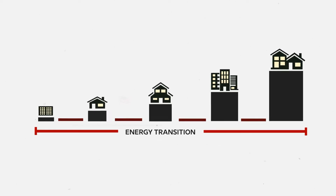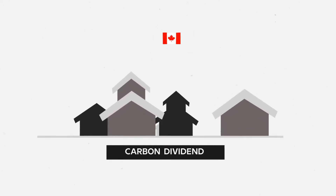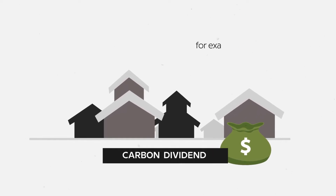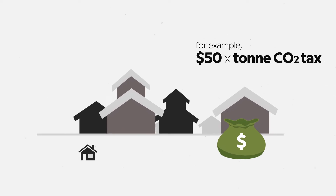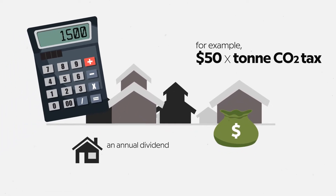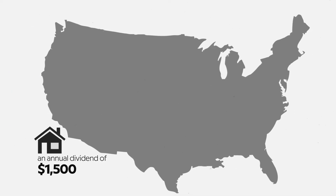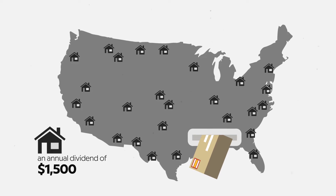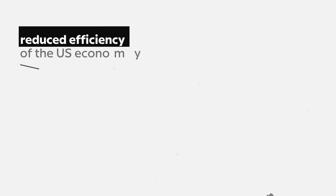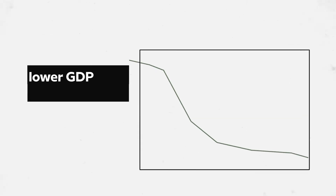As already implemented in Canada, revenues from carbon penalties can be used to compensate all households in the form of a carbon dividend. For example, a $50 per metric ton CO2 tax would return each US household an annual dividend of around $1,500 — more than the pandemic stimulus checks distributed to most US taxpayers. However, this proposed policy runs the risk of reducing the overall efficiency of the US economy, which would lower the nation's GDP and impede its economic growth.